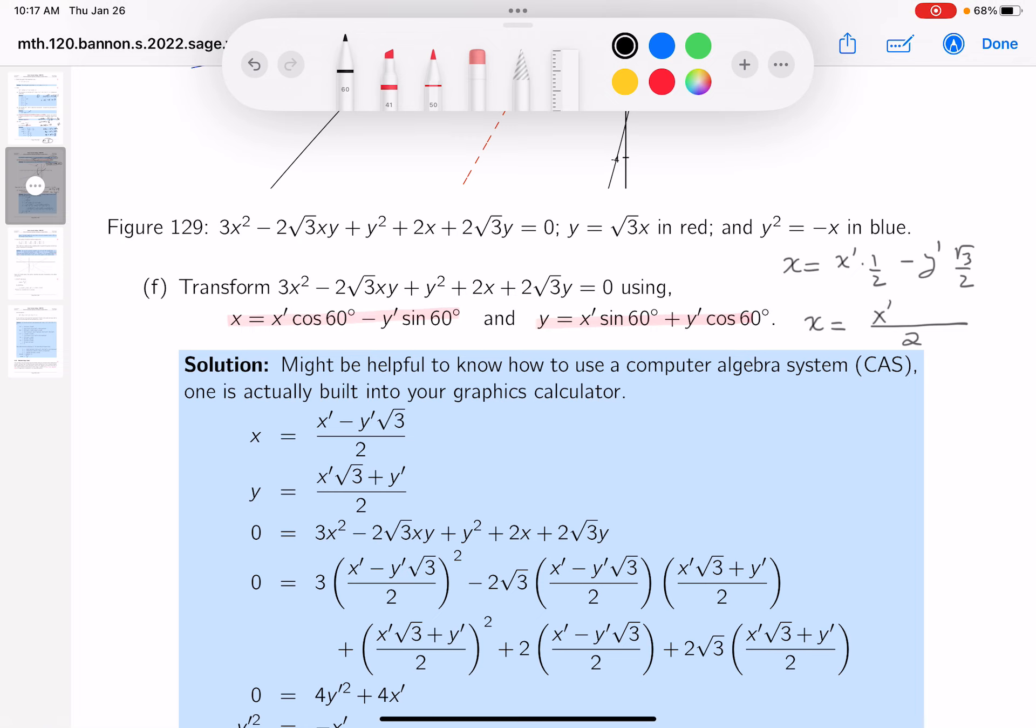X prime minus root 3 Y prime. I want to show you where this is written. And this is going to be X. And that's written right over here. Now, granted, I wrote down root 3 Y prime. They wrote down Y prime root 3. Whatever works for you. Same thing. I've got that part done.